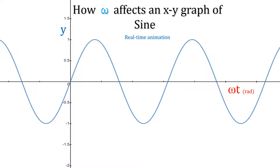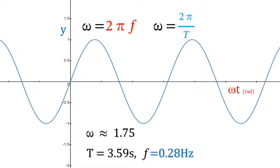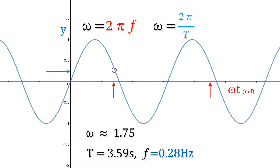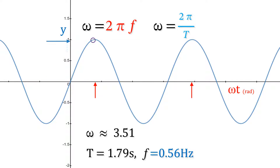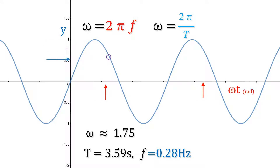How omega affects an x-y graph: in this example, we've got a period of about three and a half seconds, so the frequency is one divided by that — 0.28 cycles per second for this particular waveform. The two top equations show you how to work out omega. Then we change the frequency, which changes omega. The higher the frequency, the bigger omega is, and the faster the unit circle spins.